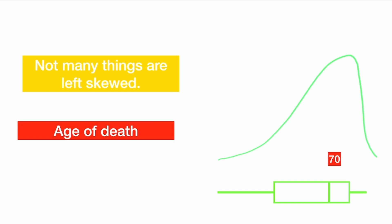Not that many things are left skewed. The only one I can really think of is age at death. Most people die around 70, give or take, and some people die young. Sorry for the depressing example.